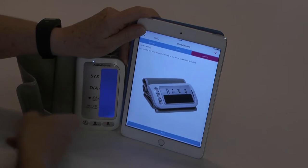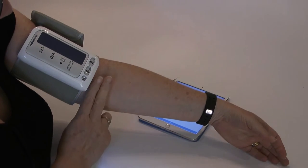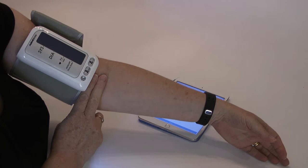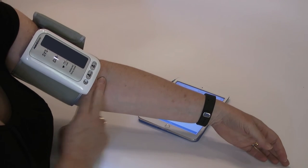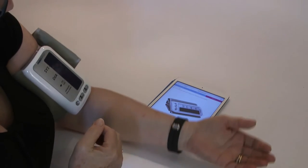Placement of the blood pressure machine should be two fingers above the fold in your elbow, nice and tight, and rest your arm out in front of you.